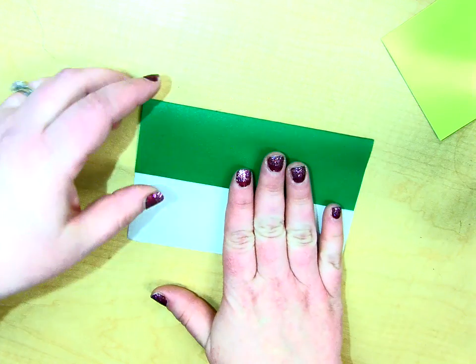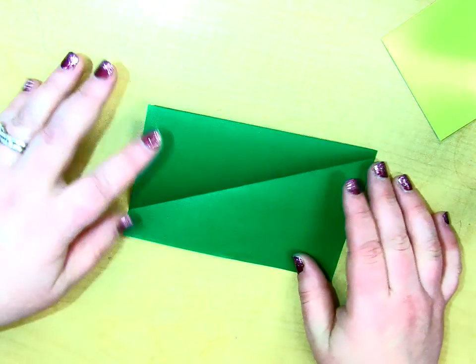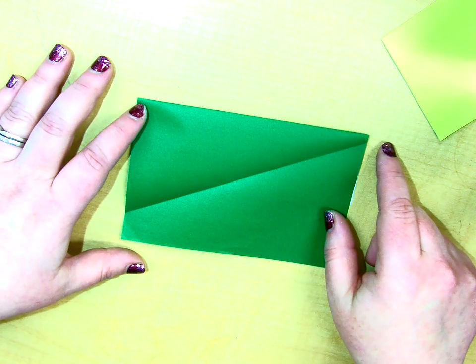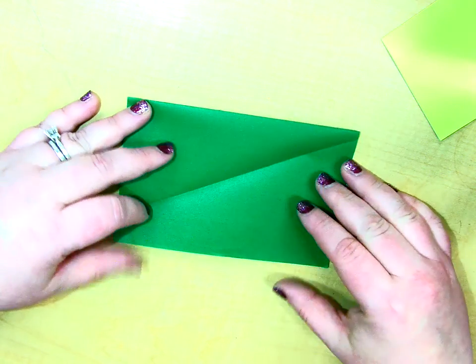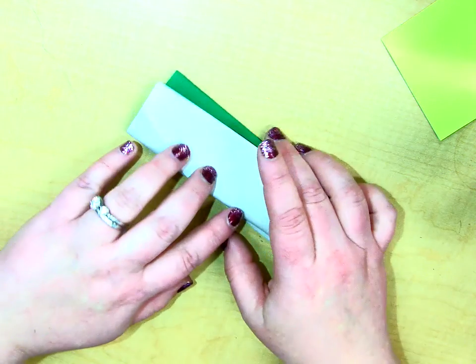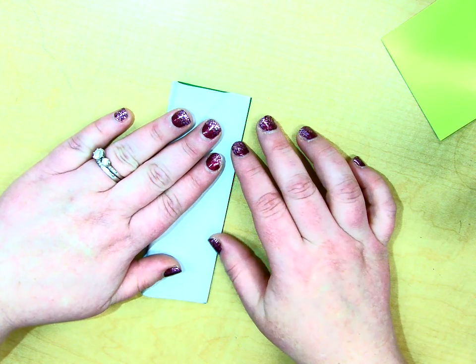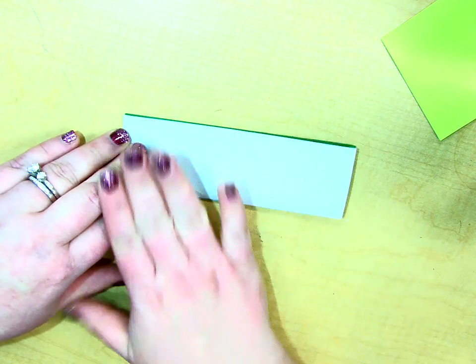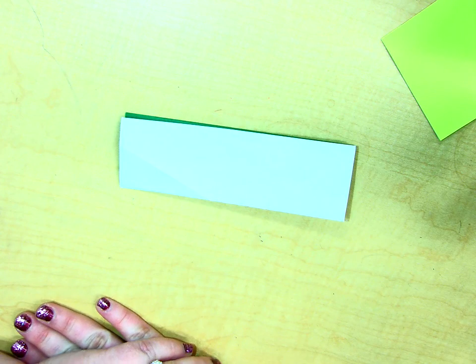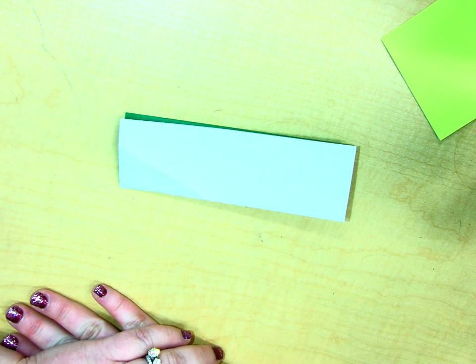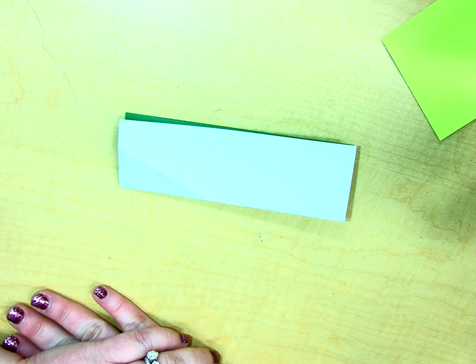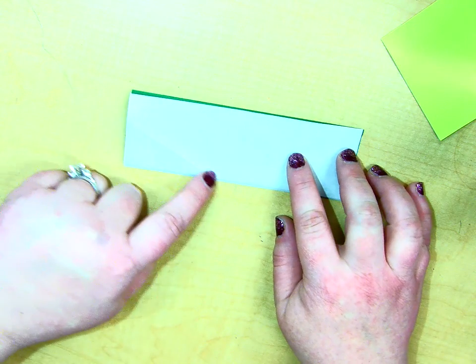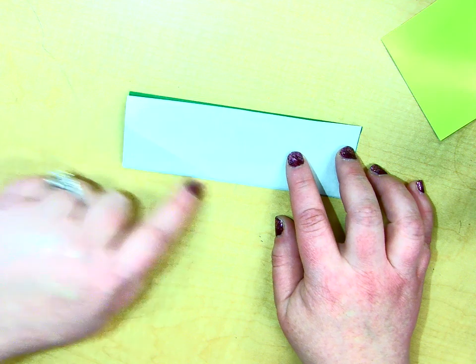And now we're going to flip it over again. The whole thing, flip it over. So you should now have a rectangle with a diagonal kind of through it like that. And then what do we do? Now we're going to fold this in half. So take your bottom half, bring it up to the top. And again, you want to try and be as precise as you can.